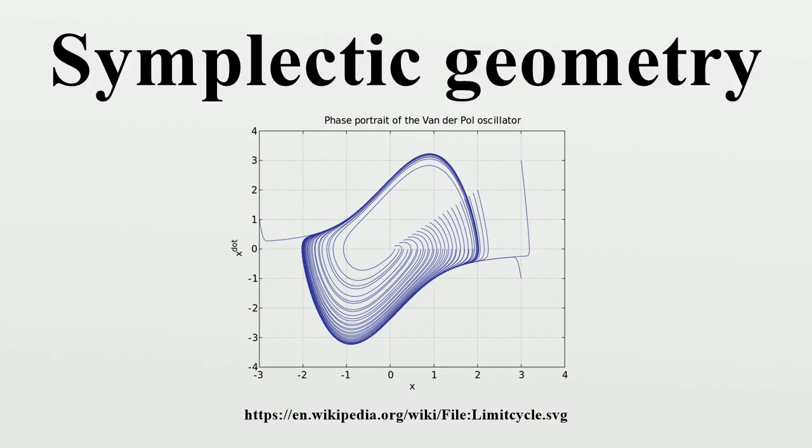A symplectic geometry is defined on a smooth, even-dimensional space that is a differentiable manifold. On this space is defined a geometric object, the symplectic form, that allows for the measurement of sizes of two-dimensional objects in the space.